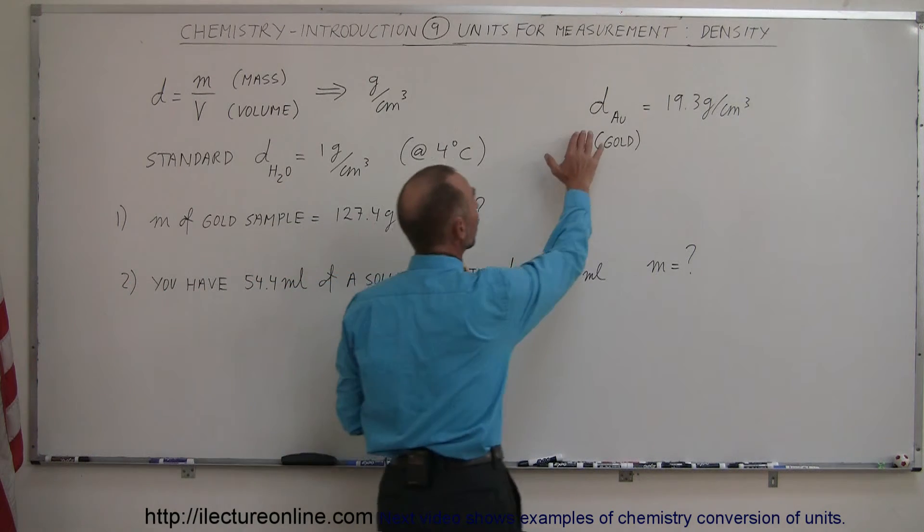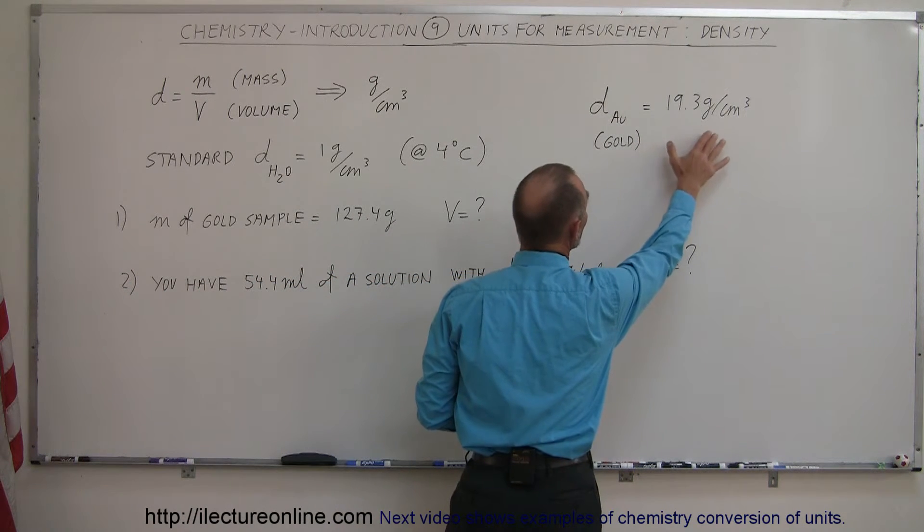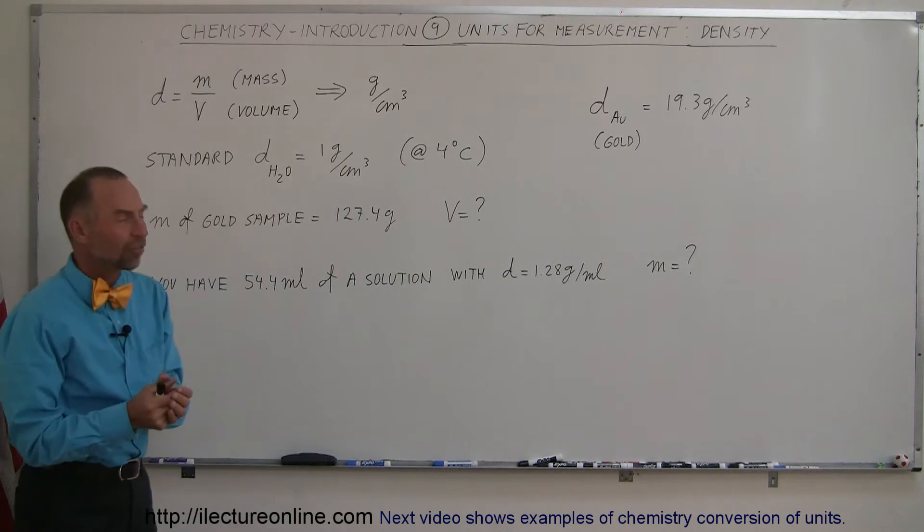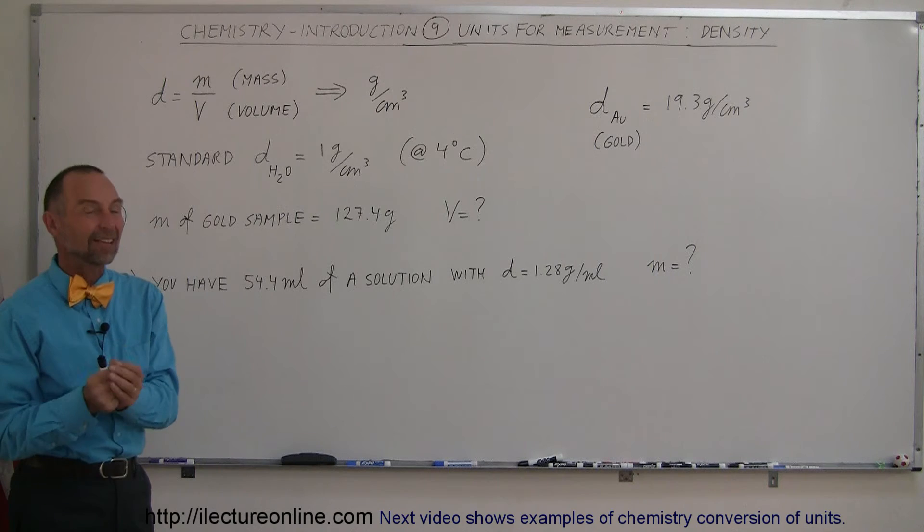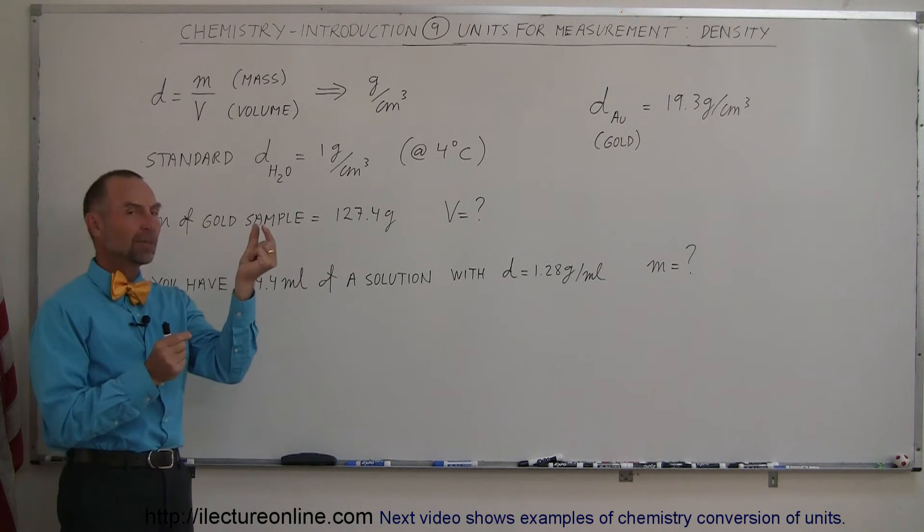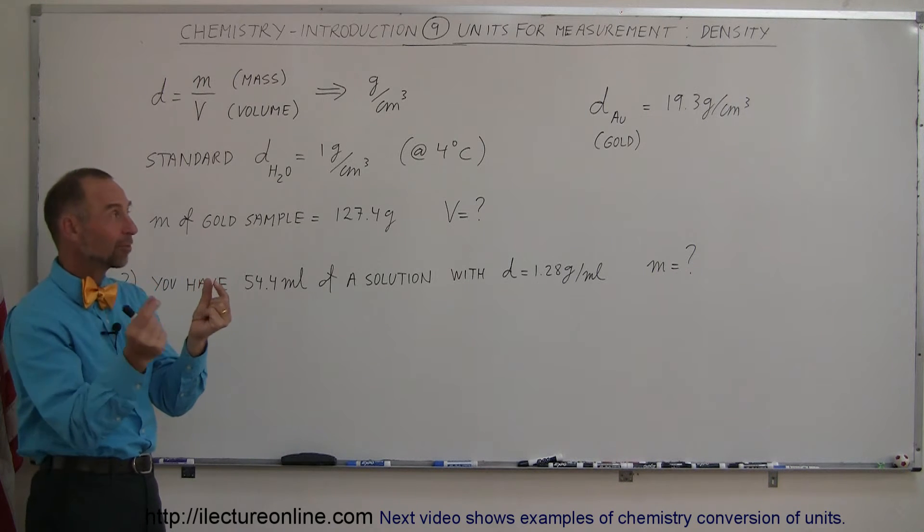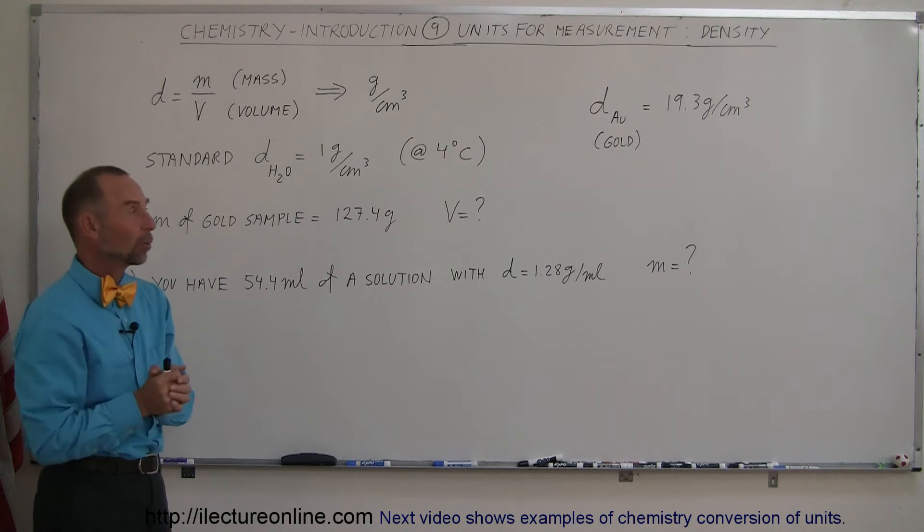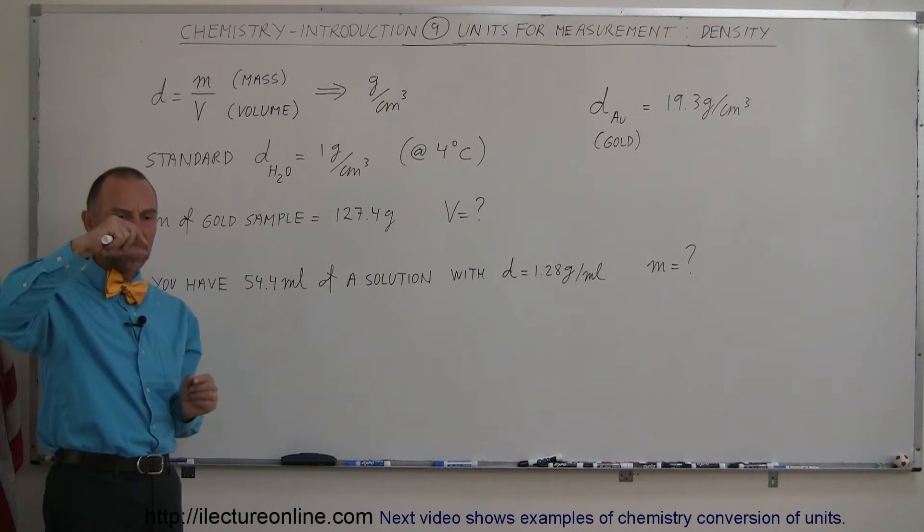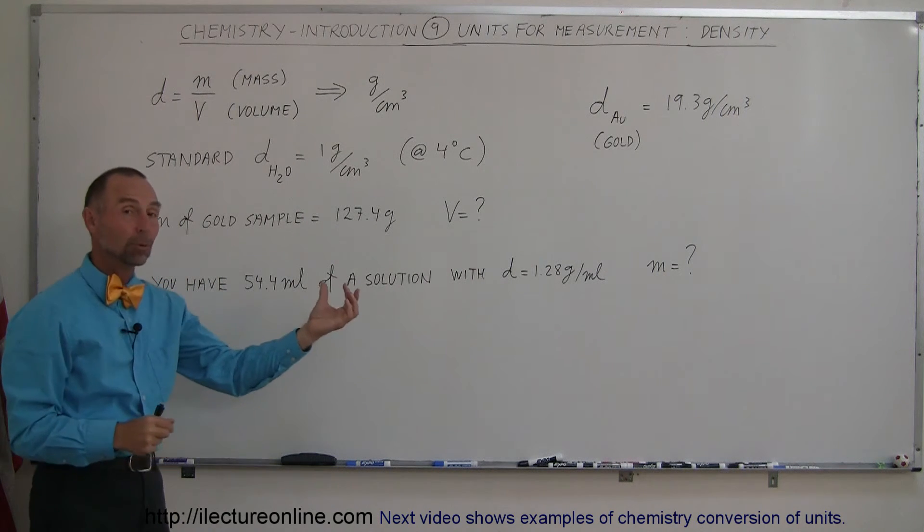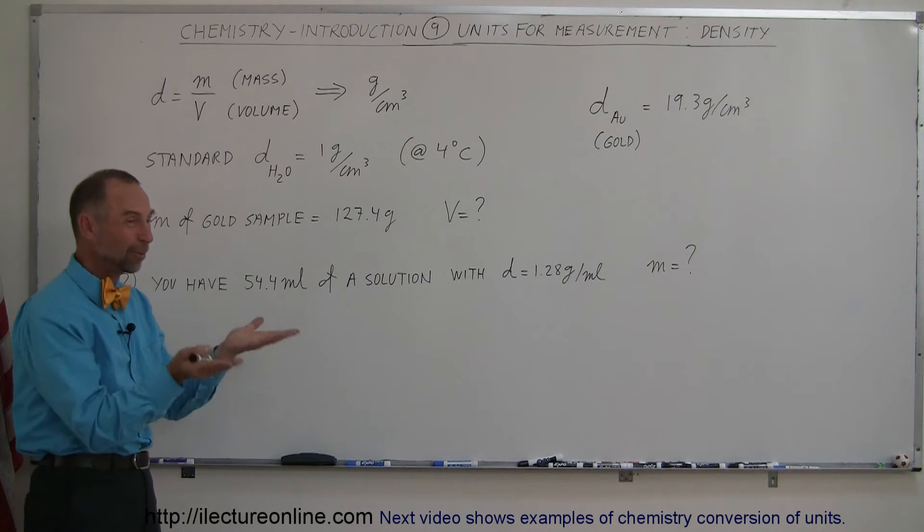For example, the density of gold is 19.3 grams per cubic centimeter, so gold is 19.3 times as dense as water. If you have 1 cubic centimeter of water and 1 cubic centimeter of gold, the gold will have 19.3 times the mass. On a scale, 1 cubic centimeter of gold would need 19.3 cubic centimeters of water on the other side to balance it out.